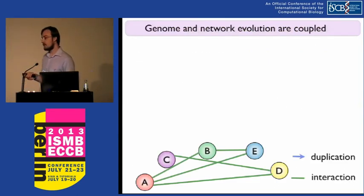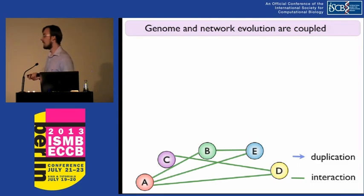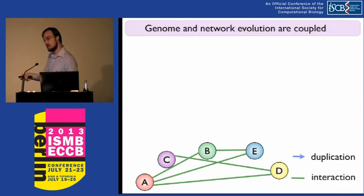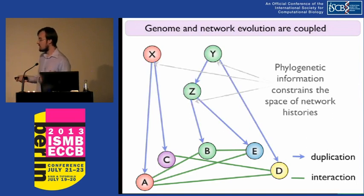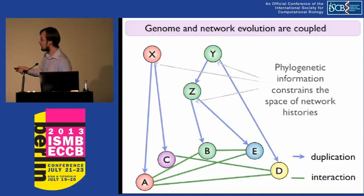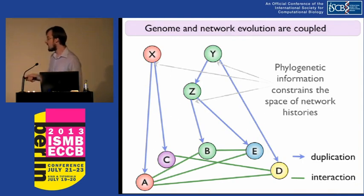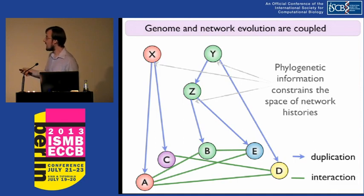The reason you're really able to do this is because genome and network evolution are highly coupled. If we have a simple interaction network with different proteins and green edges denoting protein interactions, and we draw a phylogeny on top of it, we can see there may be reason for this particular set of interactions. Proteins A and C duplicate from X, and proteins B, E, and D descend from Y. There are a lot of interactions between these two groups, which may be evidence of some ancestral interaction. The phylogenetic information constrains the space of possible networks.